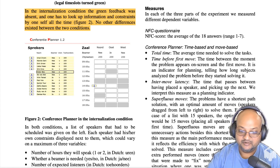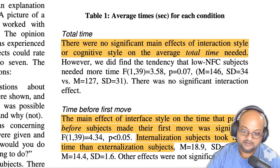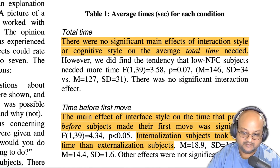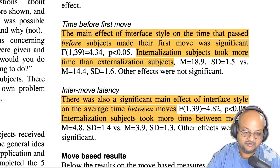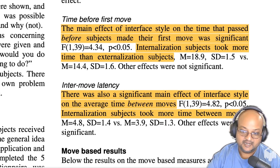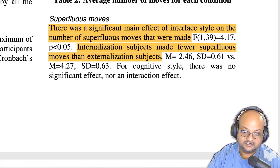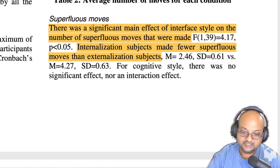There are several strategies one could adopt — for example, picking the speaker with the tightest constraints and scheduling them first. Looking at the results: there was no significant difference in total time taken between the two groups. However, internalized subjects took significantly more time before their first move and more time between moves — indicating more planning. The internalized subjects also made far fewer superfluous moves: a mean of 2.46 moves versus 4.27 moves, almost a difference of two moves.